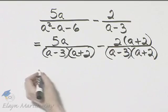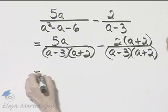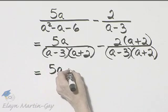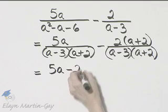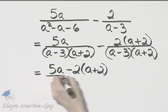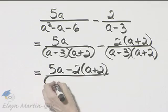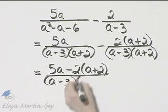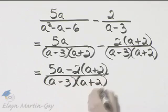Now that they're the same, I have the right to say numerator five A minus numerator two times A plus two all over a common denominator, A minus three times A plus two.